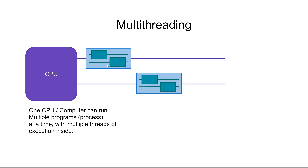The way that threads are executed is similar to how tasks or applications are executed. First, one thread gets to execute a little bit on the CPU. Then the operating system — or the application, depending on who controls the thread — switches to another thread, which gets to execute a little bit. Then the operating system switches completely to another application, and the first thread inside that application gets to execute a little bit, then switches to another thread, and so on back and forth between applications.